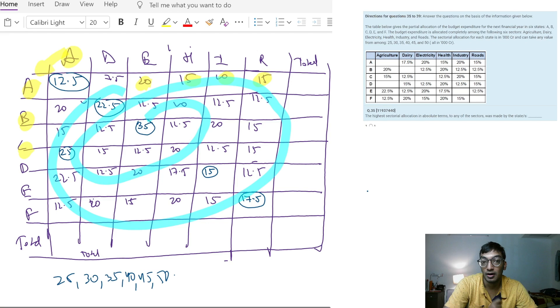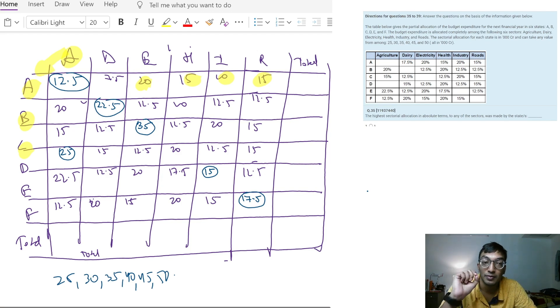I hope you don't get confused in this because the language is tricky. The sectoral allocation for each state can take any value - this means A may take 25, 30, 35, 40, 45, or 50. I hope this is very clear to you.